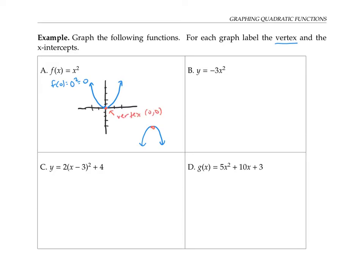The x-intercepts are where the graph crosses the x-axis — in other words, where y is zero. In this function, y = 0 means that x² = 0, which happens only when x = 0. So the x-intercept — there's only one of them — is also zero.